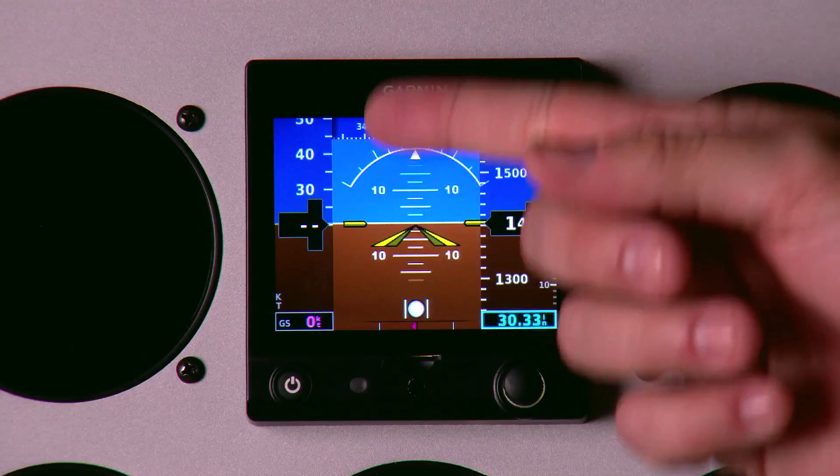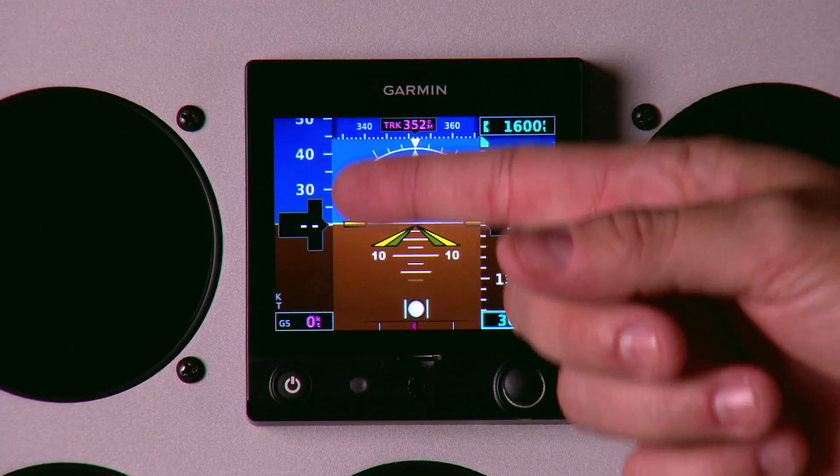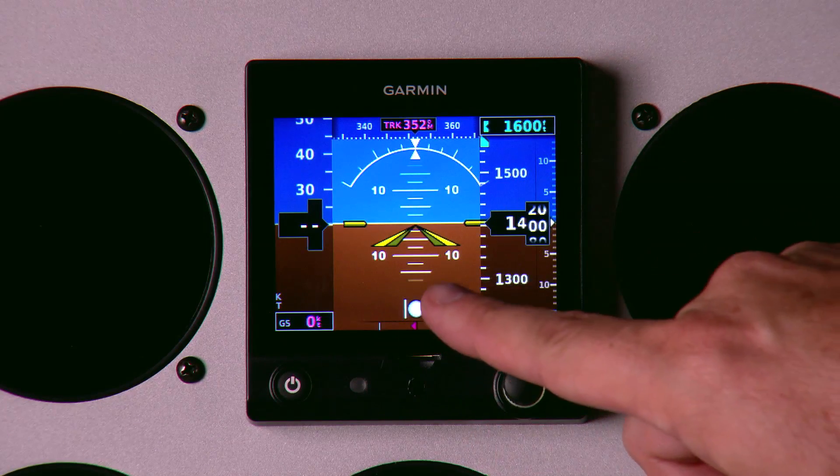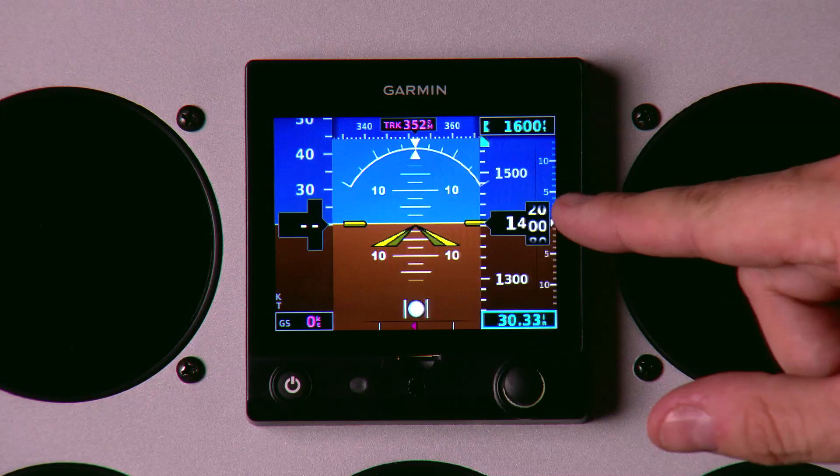The G5 gives you great basic information, including airspeed, attitude, ground speed, slip-skid indicator, and barrel-corrected altimeter.